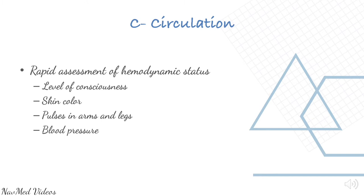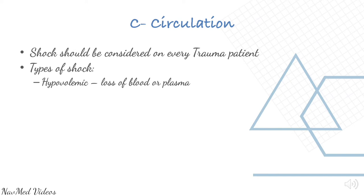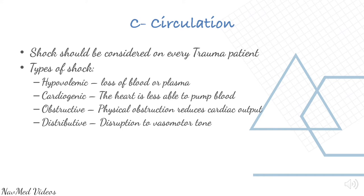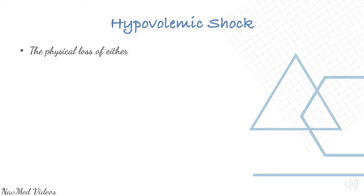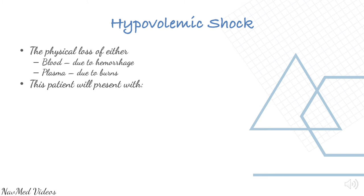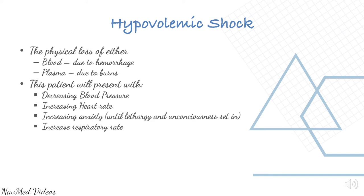Circulation involves a rapid assessment of hemodynamic status: level of consciousness, skin color, pulses in arms and legs, and blood pressure. Shock should be considered in every trauma patient. Types include hypovolemic — low blood; cardiogenic — heart is unable to pump blood normally; obstructive — physical obstruction reduces output; and distributive — disruption to vasomotor tone. Hypovolemic shock is the physical loss of either blood due to hemorrhage or plasma due to burns. The patient will present with decreased blood pressure, increased heart rate, increasing anxiety, increasing respiratory rate, and decreased urine output.